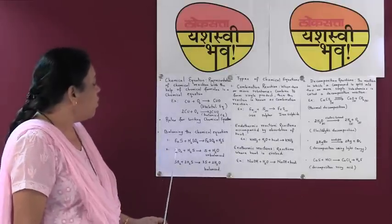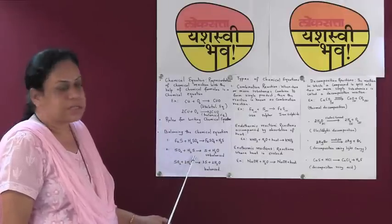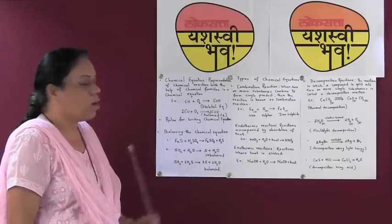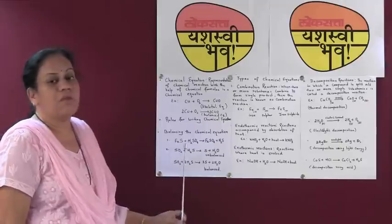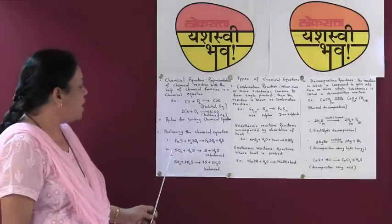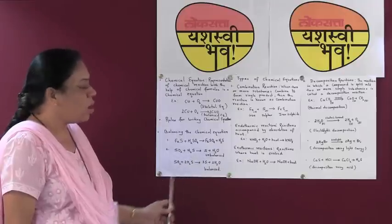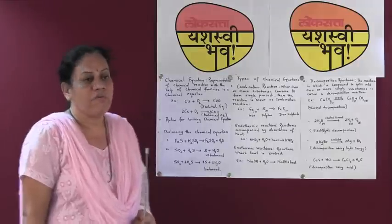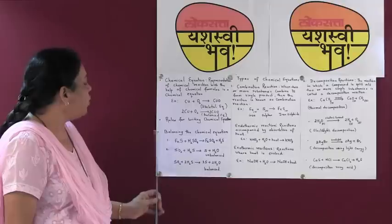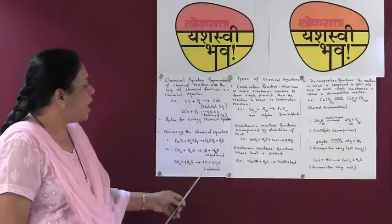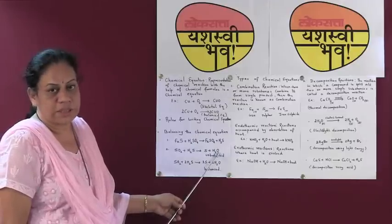Now let us take a second example where sulphur dioxide reacts with hydrogen sulphide to give sulphur and water. The atoms involved in the reaction are sulphur, oxygen, and hydrogen on both sides. On the left hand side we have 2 atoms of oxygen, whereas on the right hand side we have only 1 atom of oxygen. Hence we need to balance the number of oxygen atoms.